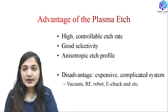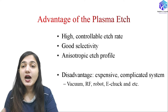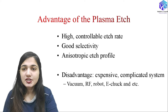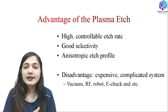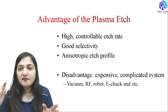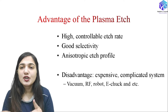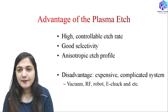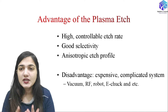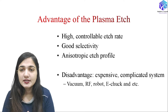Coming to the advantages of plasma etching: it gives highly controllable etch rate. If I change the ion energy — which is directly related to the etch rate — I can control the etch rate using the RF power knob. It gives good selectivity if I use a combination of ion bombardment as well as chemicals. It also gives an anisotropic etch profile, which is why we focus in detail on plasma etching.